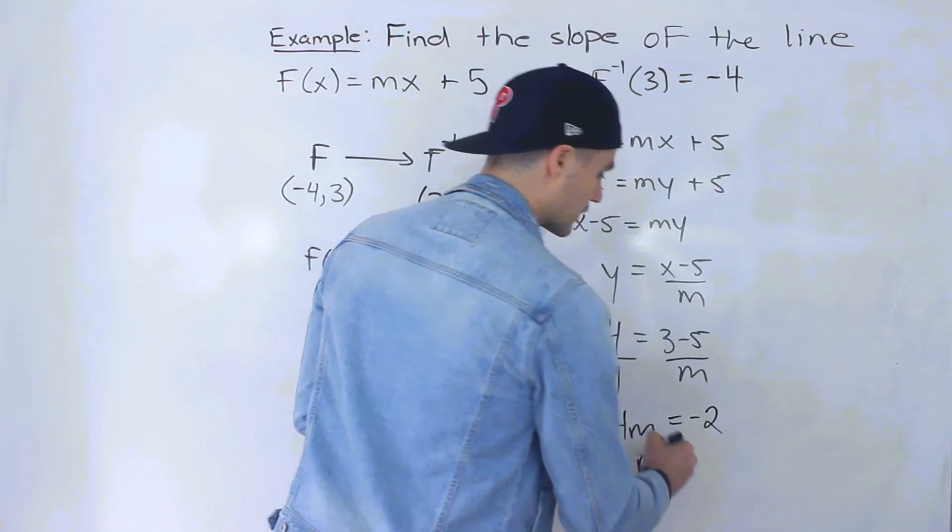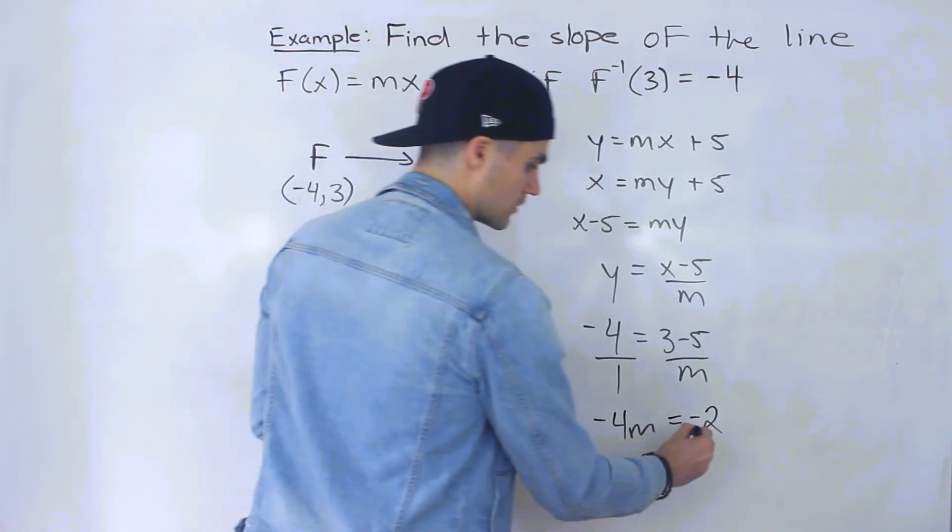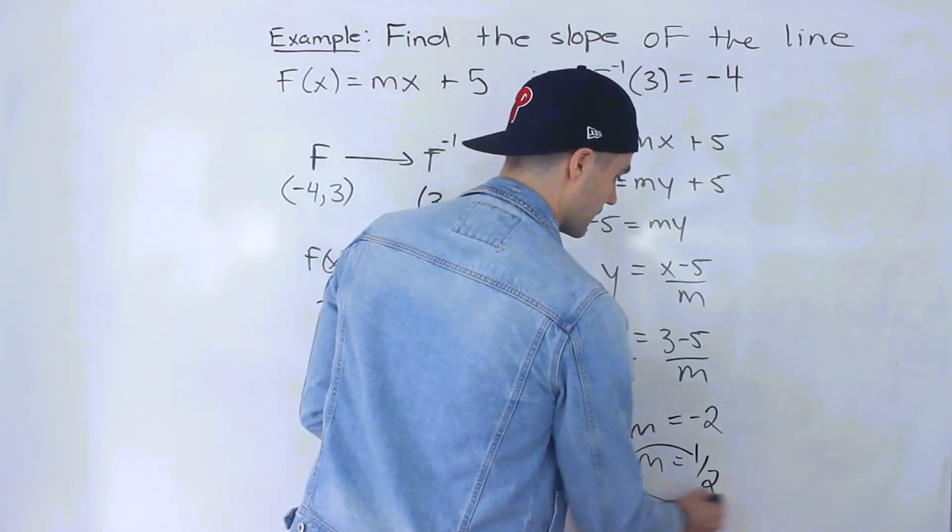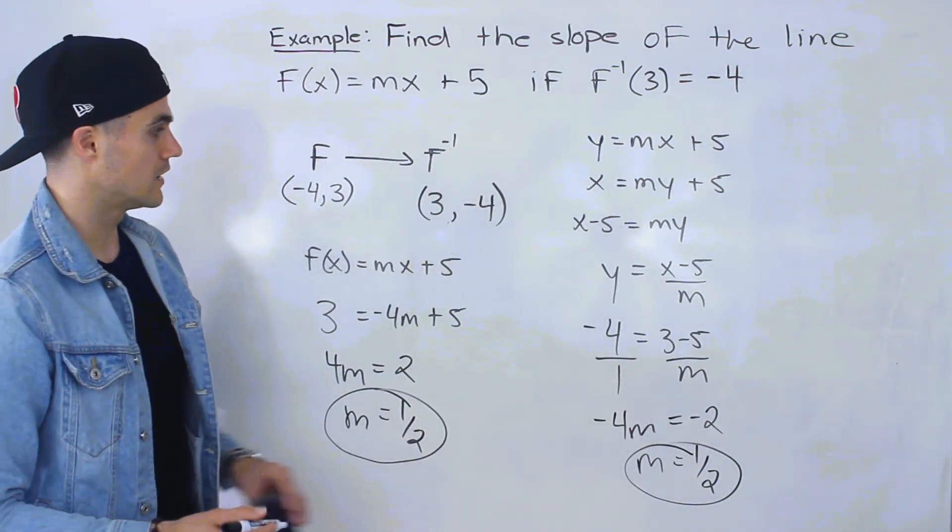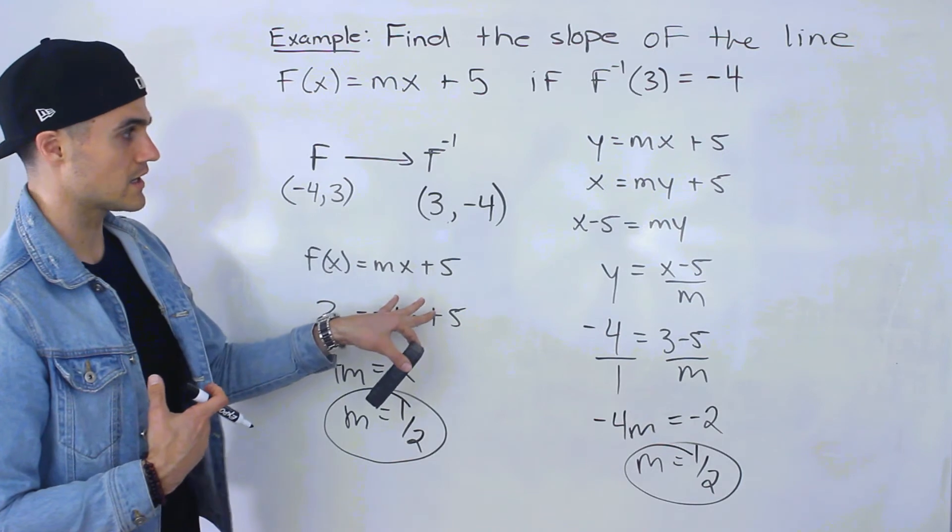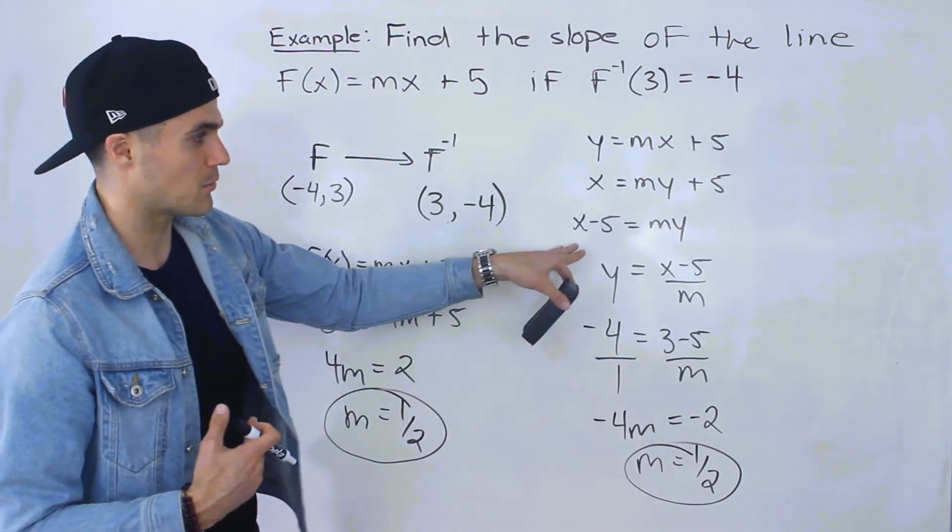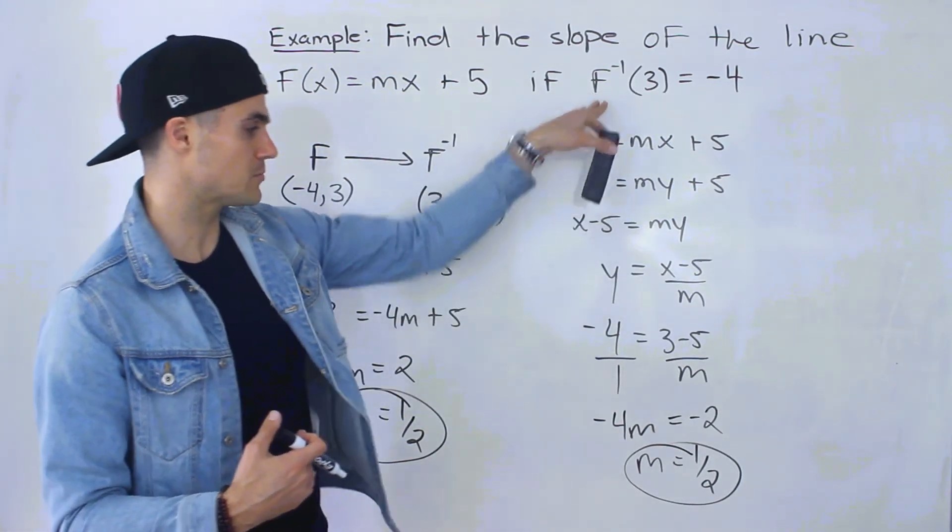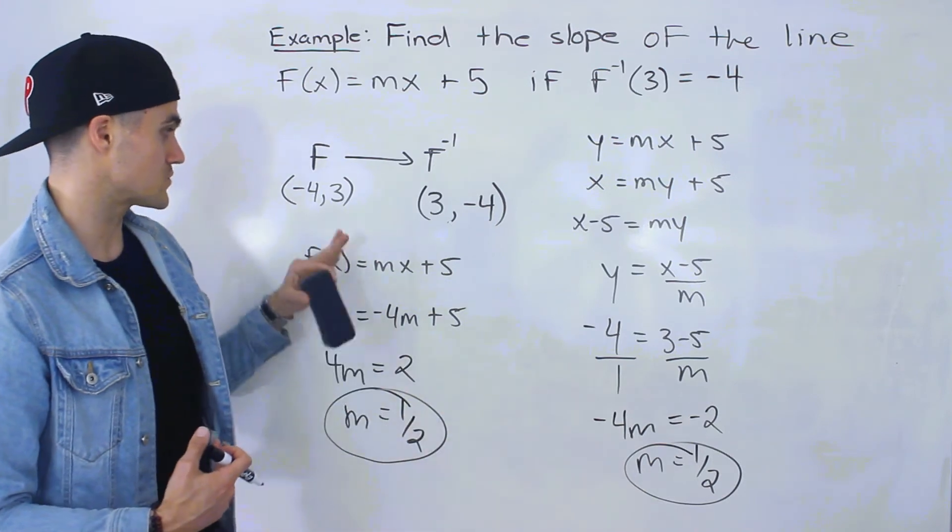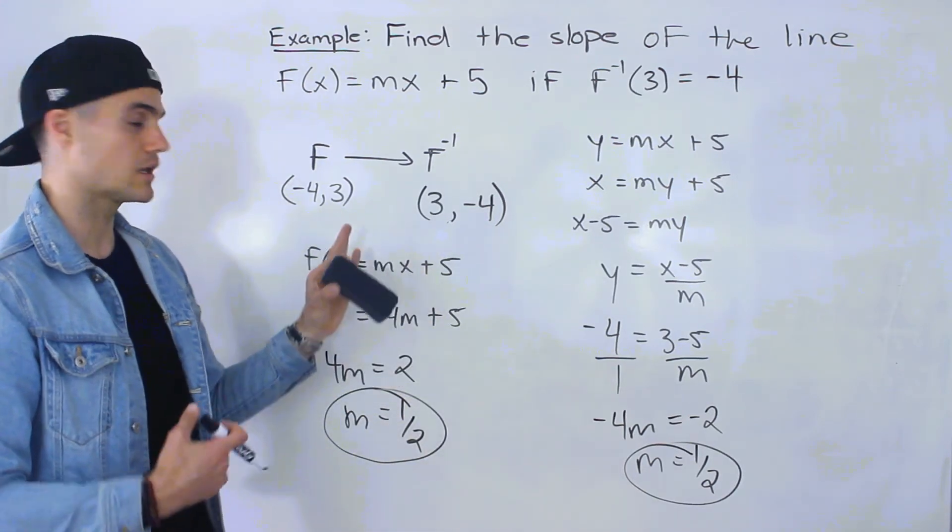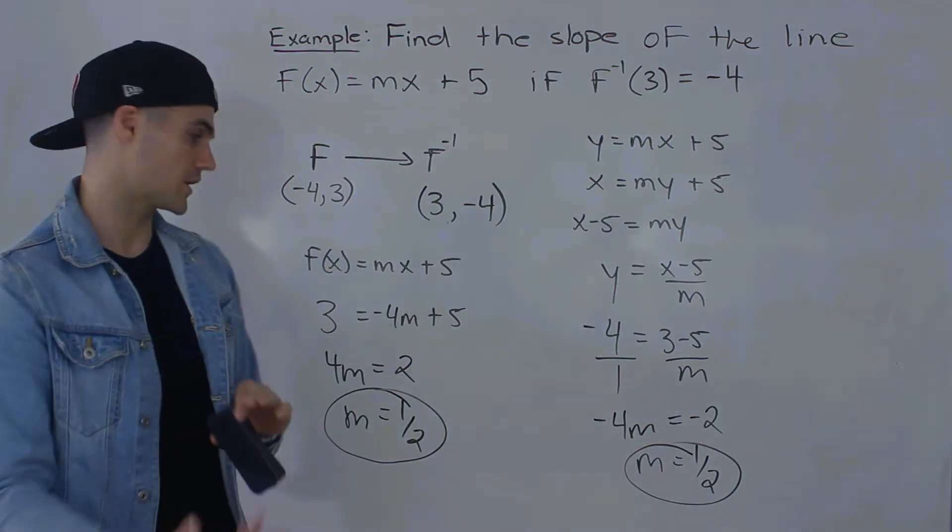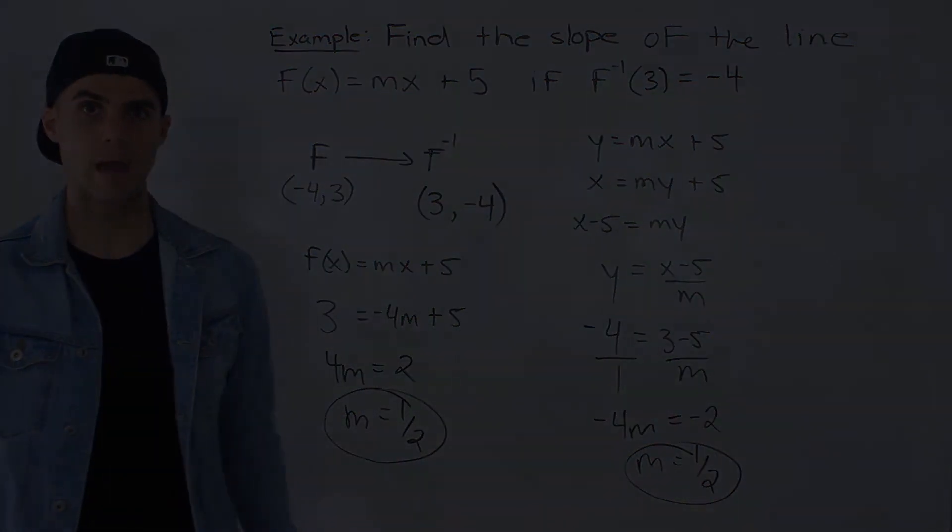So m would be -2 over -4, which simplifies to 1 over 2. Which is the exact same answer that we got here. So my opinion, this way is easier because with this way you got to come up with an expression first and then plug in that coordinate. Versus with this way, you don't really have to come up with a new expression, you just plug in the inverse coordinate and then solve for that m value.